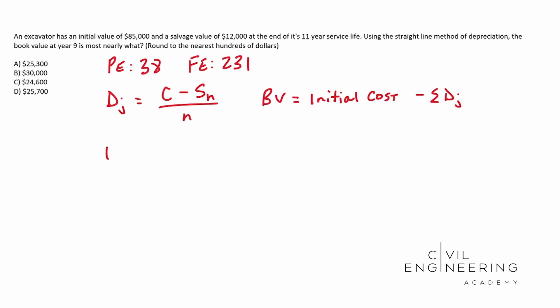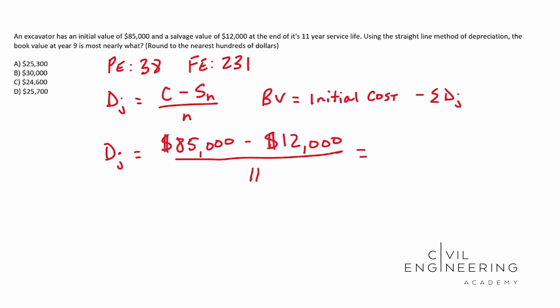So if we're going to plug in our numbers, D sub J equals 85,000 — that's our initial cost — minus our S sub N, which is our salvage value of 12,000, and that happens at year 11. So basically we're finding the slope. We have our beginning point, our end point, and how long it takes to get there. When you solve for this, you get $6,636.36 per year.